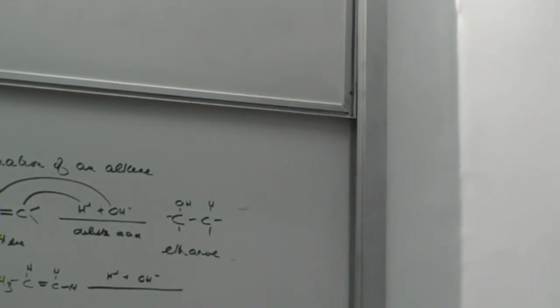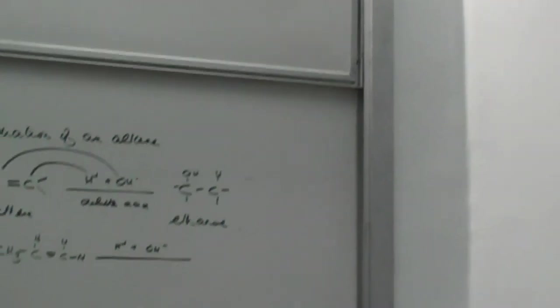With ethanol, there's only one thing it came from. But if you have more than three carbon atoms, remember we said that you have to say where the position of the OH group is in the final alcohol.